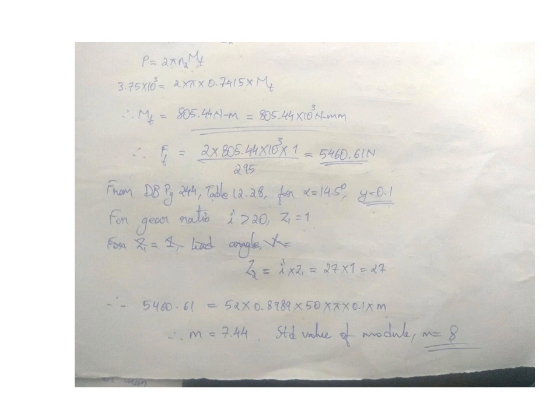Power P equals 2 pi times n times Mt. Power 3.75 times 10 to the power 3 can be converted into watts, and we get Mt value as 805.44 newton meter. So in Ft we have to substitute this Mt value and get the Ft value as 5460.61 newton.